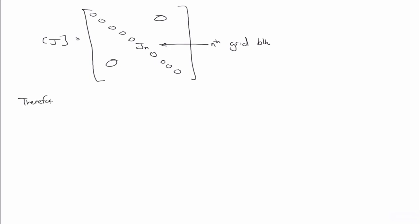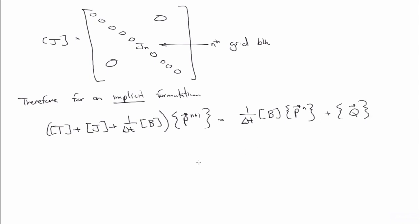So then just to reiterate, therefore, for an implicit formulation, then you have a set of discrete equations, that is a T matrix plus a J matrix plus 1 over delta T times the B matrix, all times the pressure at the n plus 1 time step equal to 1 over delta T, B times the pressure at the nth time step plus the Q vector. And so then to solve this for P n plus 1, you'd invert the left hand side here.